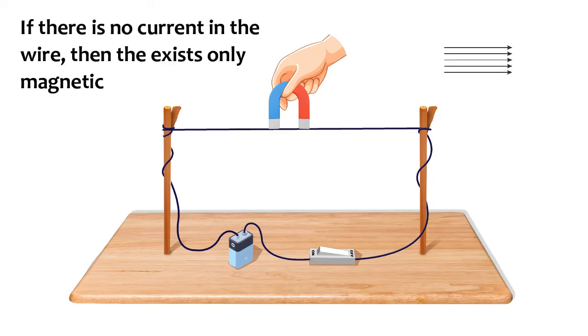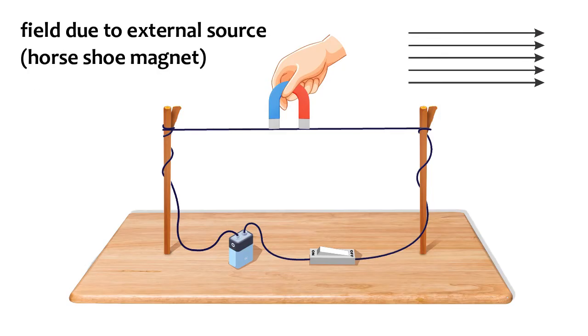If there is no current in the wire, then there exists only magnetic field due to external source.